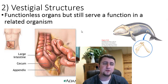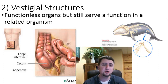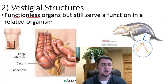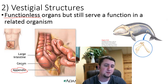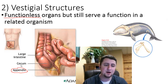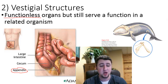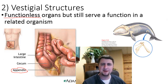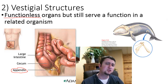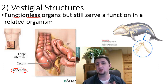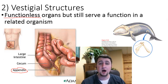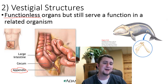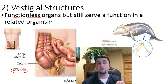Another really cool evidence for evolution is vestigial structures — functionless organs that still probably serve some function in a related organism. No better example than your own appendix. The appendix is a pinky-sized organ on the end of your cecum, which is the first part of your large intestine. It doesn't really do much good for us other than get inflamed, be really painful, and require a trip to the hospital — that's called appendicitis. However, the appendix in rabbits still serves a huge function: it allows them to digest grass. We humans haven't really eaten grass as part of our diet in many thousands of years, so the appendix lost its function and became vestigial.